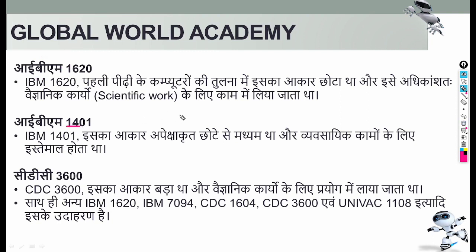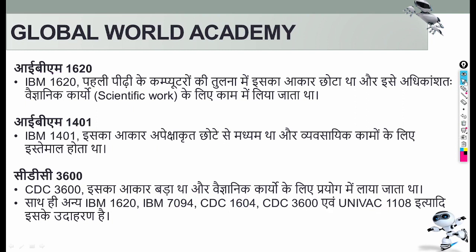IBM 1620 was used for scientific work like weather forecasting, while IBM 1401 was used for business purposes. Other examples include IBM 7094, CDC 1000, and UNIVAC 1108 — all designed in the second generation. These were smaller than first-generation computers and were sold commercially for both scientific and business purposes.